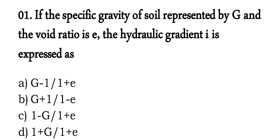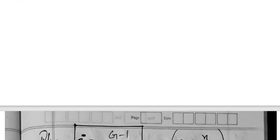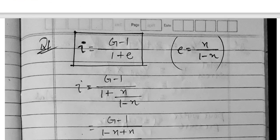First question: if the specific gravity of the soil is represented by Z and the void ratio is E, the critical hydraulic gradient I is expressed as? The correct answer is option A: I equals Z minus 1, divided by 1 plus E. That is, hydraulic gradient equals (Z − 1) / (1 + E), where E is the void ratio.